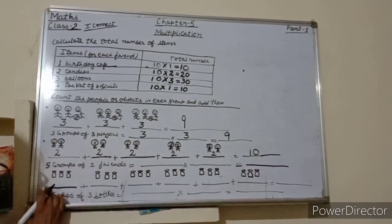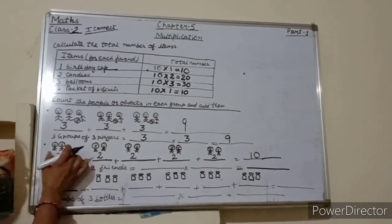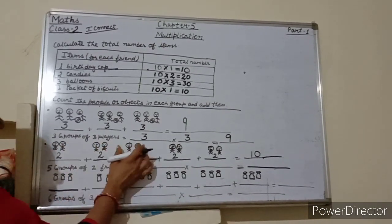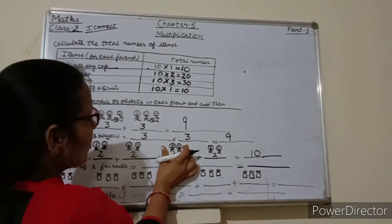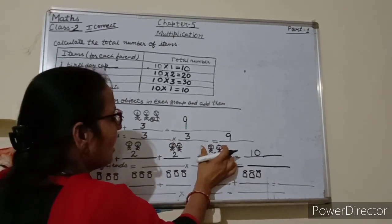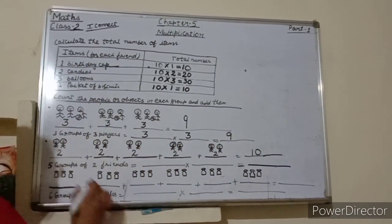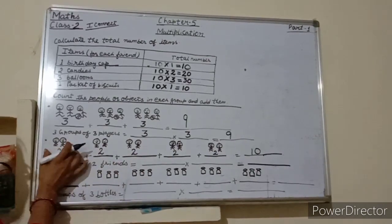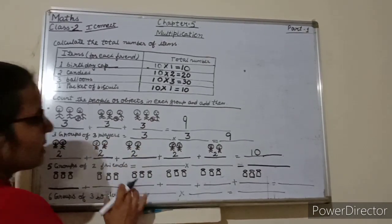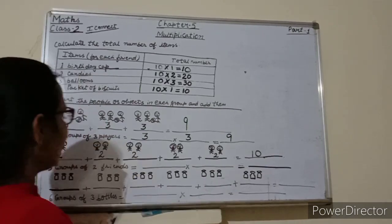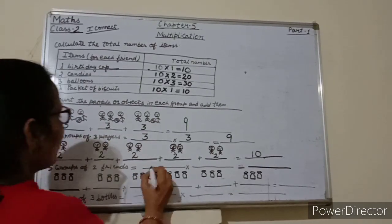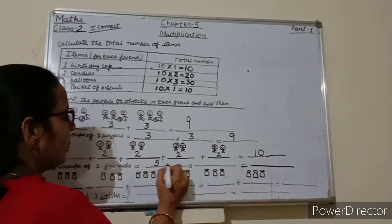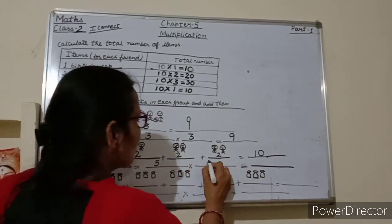And how many groups are there? 1 group, 2 groups, 3 groups, 4 groups, and here 5 groups. So 5 groups of 2 friends — in each group, 2 friends are there. So here we will write 5 into 2.